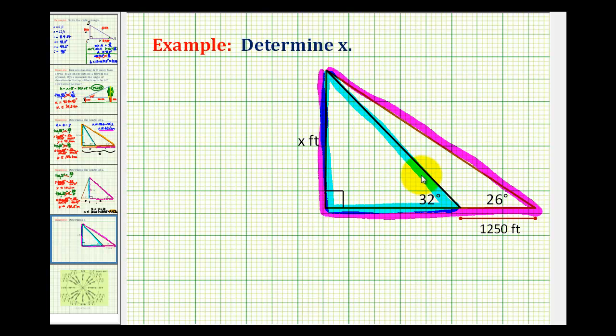is that looking at this smaller right triangle, we know the measure of this angle but we don't know the length of any of the sides. So let's let the length of this side be equal to y, therefore the entire length of this side of the large right triangle would be y plus 1,250 feet.